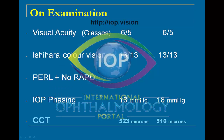When we initially examined him, he had excellent acuity in both eyes with normal color vision, no RAPD, and on intraocular pressure phasing his highest intraocular pressures were 18 mmHg in each eye. He did have a moderately reduced central corneal thickness at 523 microns in one eye and 516 in the other.